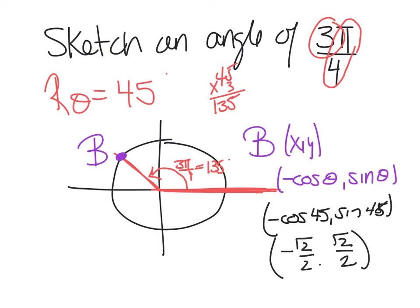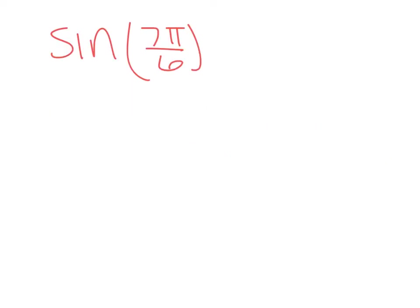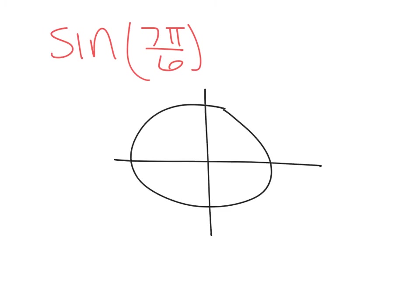We've got a lot of good review headed your way. I'm going to give you one to practice with - the more you practice on your own, the better you'll be. Find the sine of 7π/6: graph that angle on the unit circle and name the coordinates of the point on the arc. Pause it. Good luck.